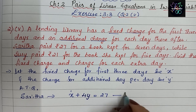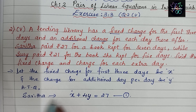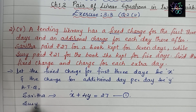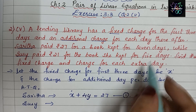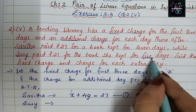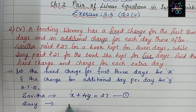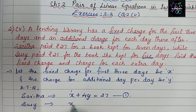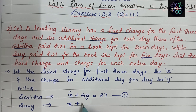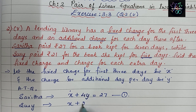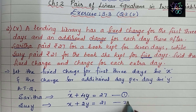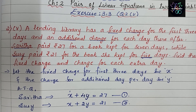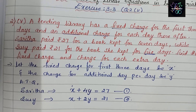Now for Sassy: she kept the book for five days and paid rupees 21. The fixed charge covers three days, and she kept it two extra days, because three plus two equals five. So the equation is: x + 2y = 21. This is Equation 2. Let us now solve Equations 1 and 2.